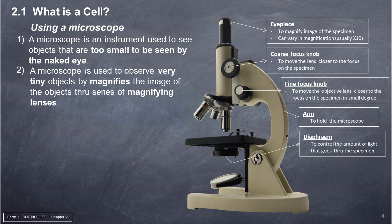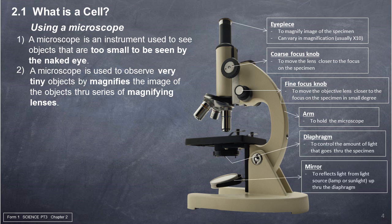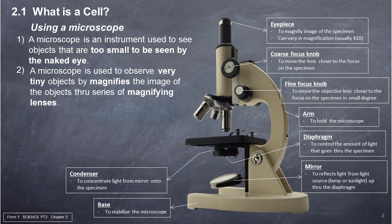10. Diaphragm: to control the amount of light that goes through the specimen. 11. Mirror: to reflect light from a light source — lamp or sunlight — up through the diaphragm. 12. Base: to stabilize the microscope. Condenser: to concentrate light from the mirror onto the specimen.